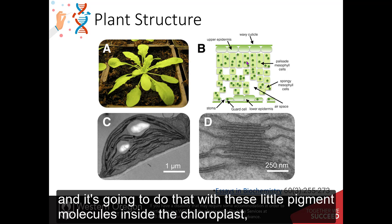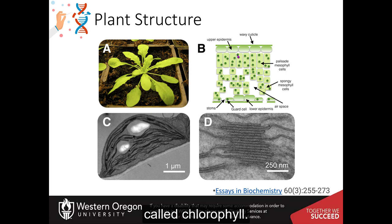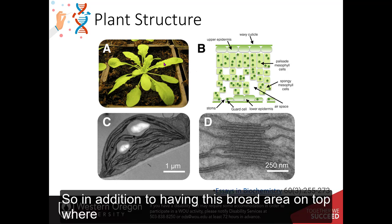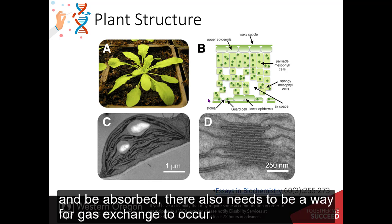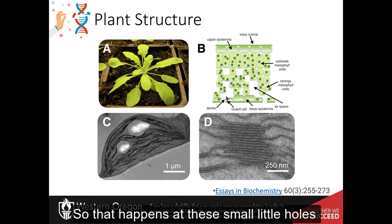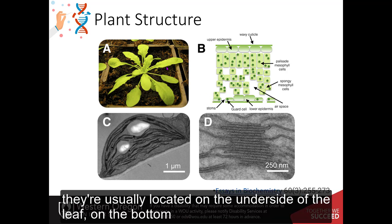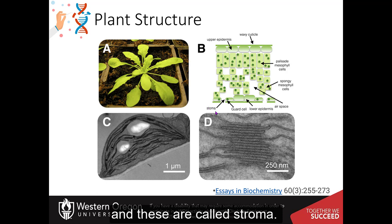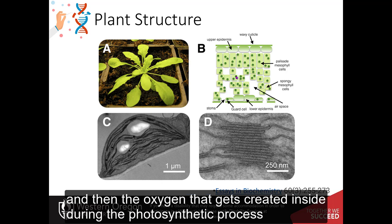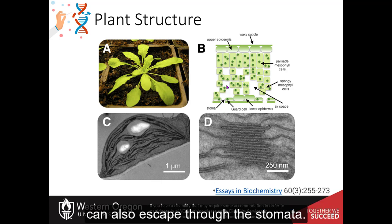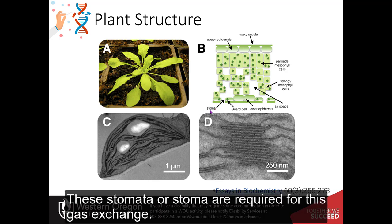And it's going to do that with these little pigment molecules inside the chloroplast called chlorophyll. So in addition to having this broad area on top where the photons of light can hit on here and be absorbed, there also needs to be a way for gas exchange to occur. So that happens at these small little holes. They're usually located on the underside of the leaf, on the bottom. And these are called stomata. And so the stomata is where the carbon dioxide can enter into the leaf structure. And then the oxygen that gets created inside during the photosynthetic process can also escape through the stomata. These stomata are required for this gas exchange.